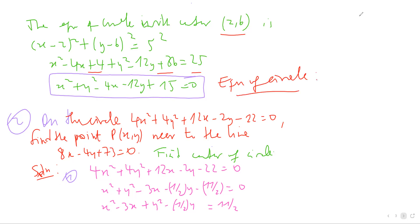This is a very good exercise for understanding how to derive the equation of a circle when given two tangent lines. The next question is: given a circle 4x squared plus 4y squared plus 12x minus 2y minus 22 equals 0, can you find the point on the circle nearest to a given line? If you have a circle with a center and a line, the question is: can we find the point on the circle closest to that line?